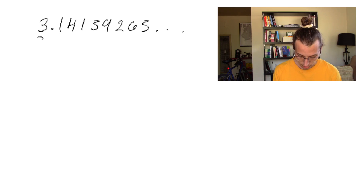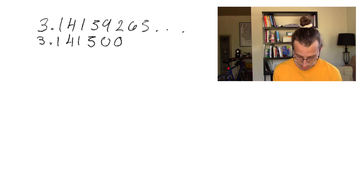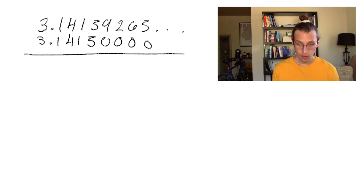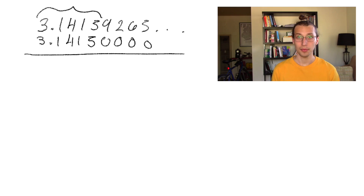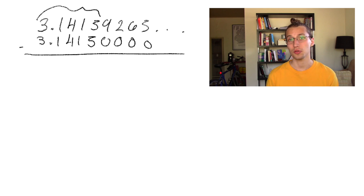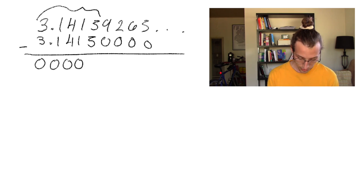Typically, the more leftmost digits of a real number are the same as some other number, the closer we say those two numbers are. So, for example, if we were to consider 3.1415 and then maybe a bunch of zeros, we'd say that these numbers are close because they share the first five digits with each other.